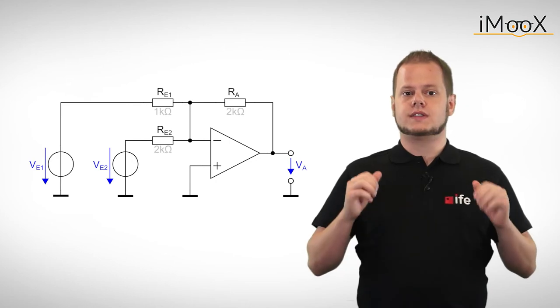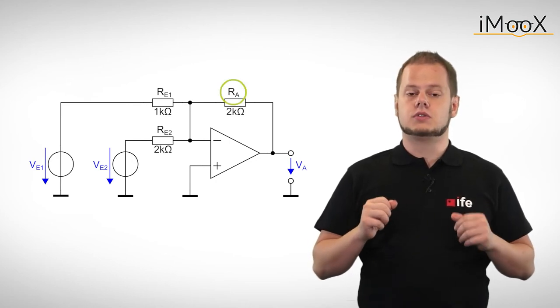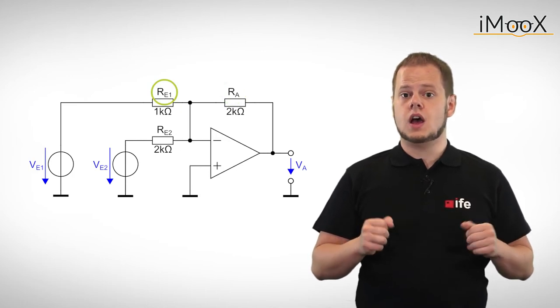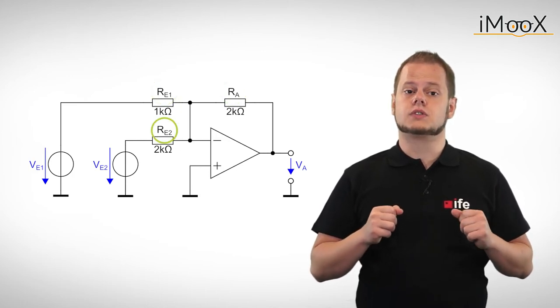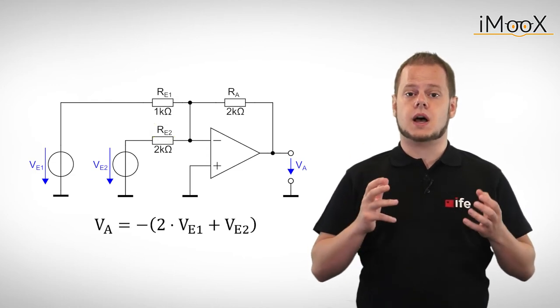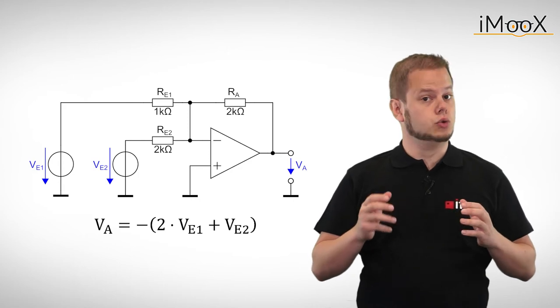As a small example let's assume Ra equals 2 kilo ohms, Re1 equals 1 kilo ohms and Re2 equals 2 kilo ohms. The output voltage equals the negative sum of 2 Ve1 plus Ve2.